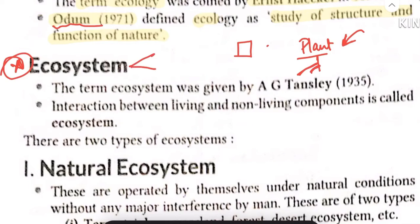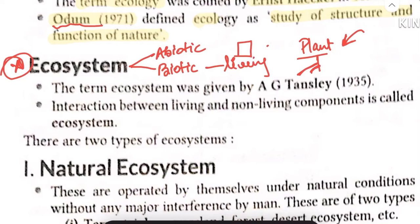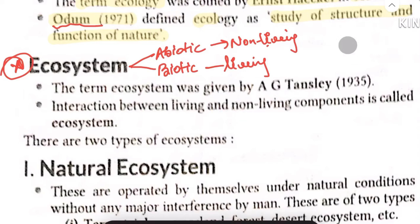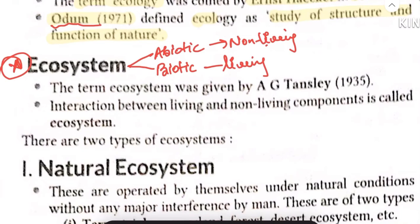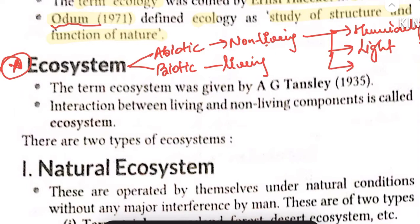There are two types of components. One is abiotic, which refers to non-living factors. Biotic means living, and abiotic means non-living. Non-living factors include humidity, light, soil, water, and temperature — these are all abiotic factors present in the environment.